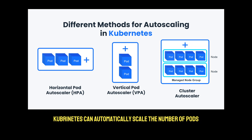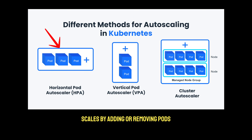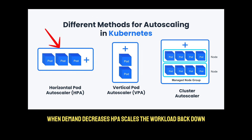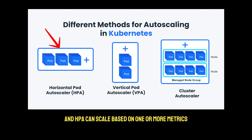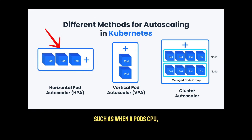Kubernetes can automatically scale the number of pods based on traffic load. Horizontal Pod Autoscaling, or HPA, scales by adding or removing pods — it starts new pod replicas to serve additional traffic, and when demand decreases, scales the workload back down. HPA can scale based on one or more metrics, including HTTP request throughput, message queue size, CPU utilization, memory utilization, and actual resource usage such as when a pod's CPU or memory usage exceeds a threshold.